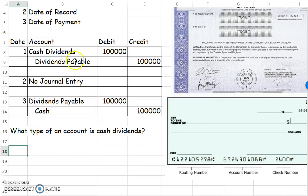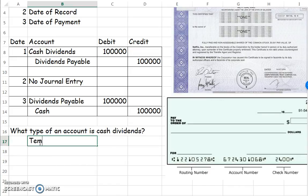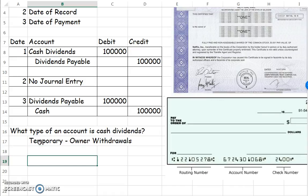Let's look at these accounts. You're familiar with all of them except for cash dividends — this is a new account for us. What type of account is cash dividends? First of all, it's a temporary account, and it's really comparable to owner withdrawals because it is the distribution of earnings to the owners. The only difference is that the corporation has to decide to declare a dividend — the owners cannot choose to take a dividend on their own. It's a temporary account, meaning it closes at the end of each period. So the question is, what does it close to?